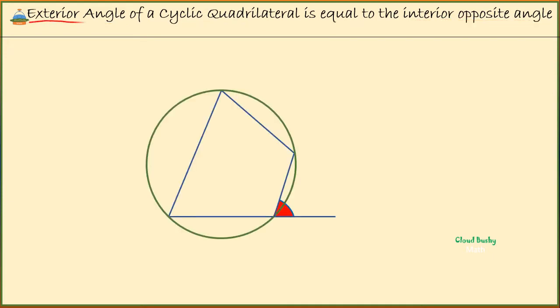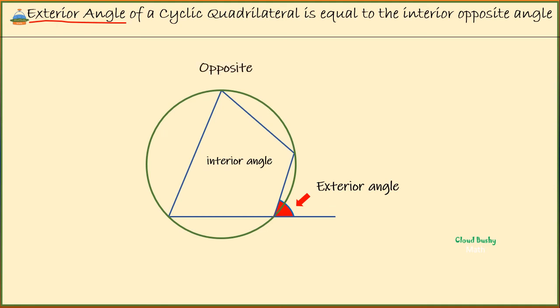Now an exterior angle is an angle that is outside the quadrilateral. In our diagram, we have this exterior angle. The interior angle that is opposite this marked exterior angle is that one.